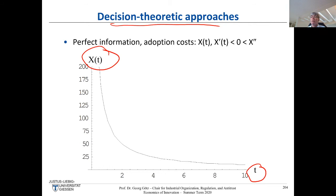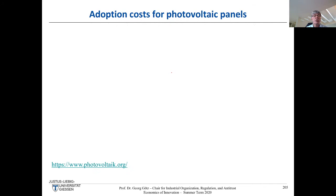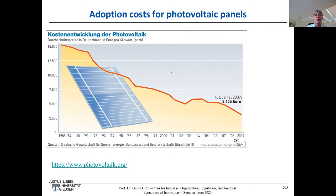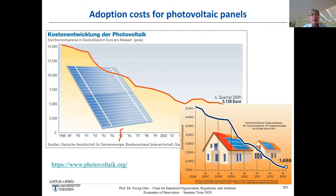Moving on with our decision-theoretic approach: is perfect information about the adoption cost a sensible assumption? Looking at the evolution of photovoltaic panel costs — in the very beginning it wasn't clear how costs would evolve, but once you're in the mid-1990s, you see it's going down pretty steadily. This downward-sloping pattern — adoption costs decreasing over time at a decreasing rate — is what we capture here.